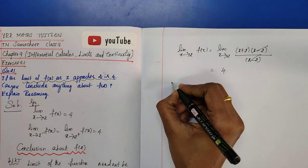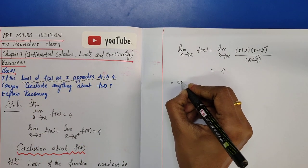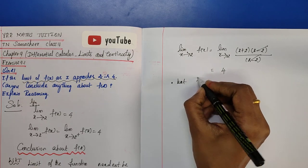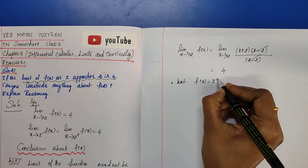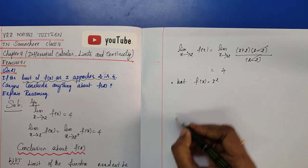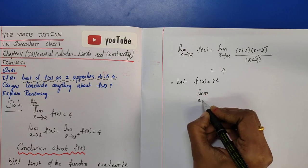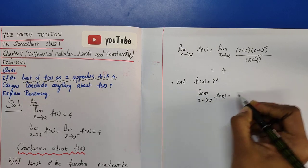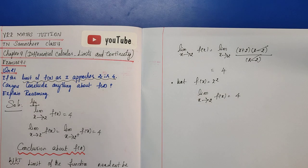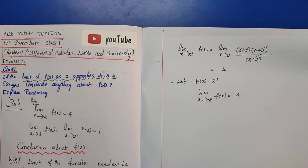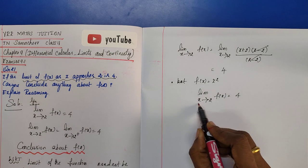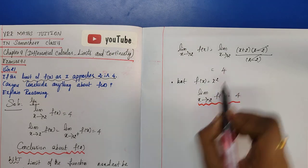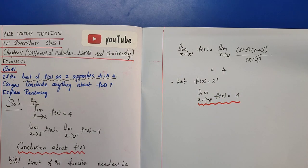One more example: let f(x) = x². Then the limit as x tends to 2 of f(x) equals 2² = 4. So again the limit value is 4.